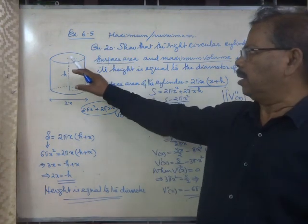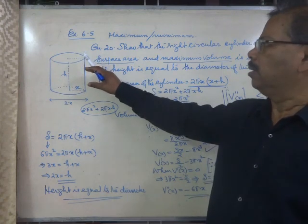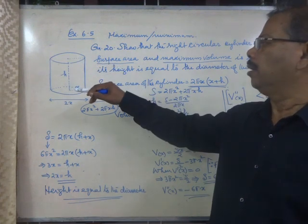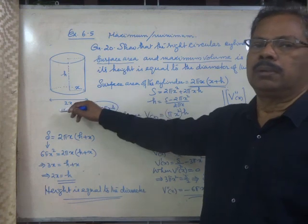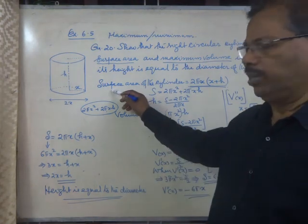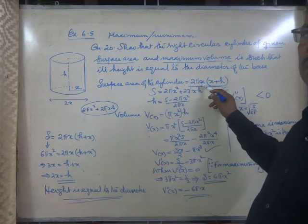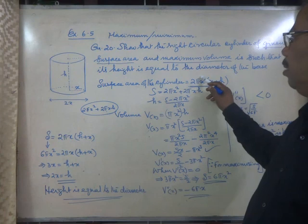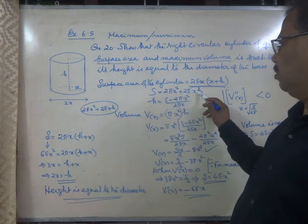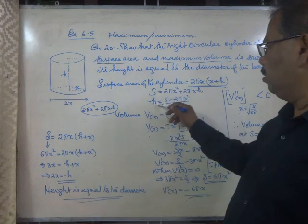If we are given a cylinder of given surface area to have maximum volume, then the height will be equal to the diameter. You have to prove it. Surface area is fixed. Surface area of the cylinder is 2π into radius into sum of radius and height. That is the formula for the total surface area. It can be split into 2πx² plus 2πxh.